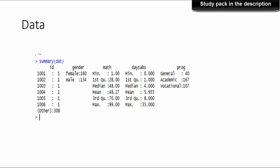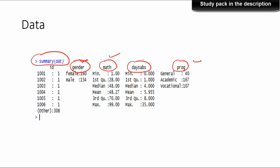We have summarized the data using a summary. We have gender for female and male and we have score on maths, but we are not going to use gender. We will only use two independent variables: maths and the program a student is enrolled in. Days absent is the dependent variable, maths is independent variable 1, and program is independent variable 2.